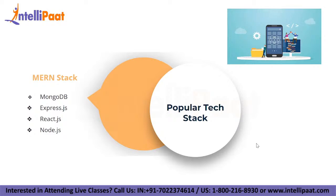The first one is the MERN stack. MERN stands for MongoDB, ExpressJS, ReactJS, and NodeJS. MongoDB is a NoSQL database that uses a binary JSON format to store data. ExpressJS is a NodeJS backend web application framework for quickly and easily building online apps. React is a JavaScript library for developing user interfaces. NodeJS is a JavaScript runtime environment that runs on the server.